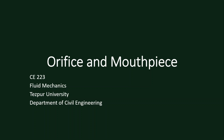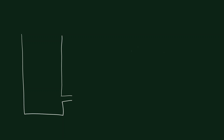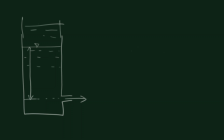Let's continue from the previous lecture that was about orifice. Now let's discuss mouthpiece. The mouthpiece is a small tube or pipe attached to an orifice or opening. How does it differ from an orifice? The main principle is similar — whatever amount of head you provide will govern the flow through the mouthpiece. If you increase the head, more flow will take place.